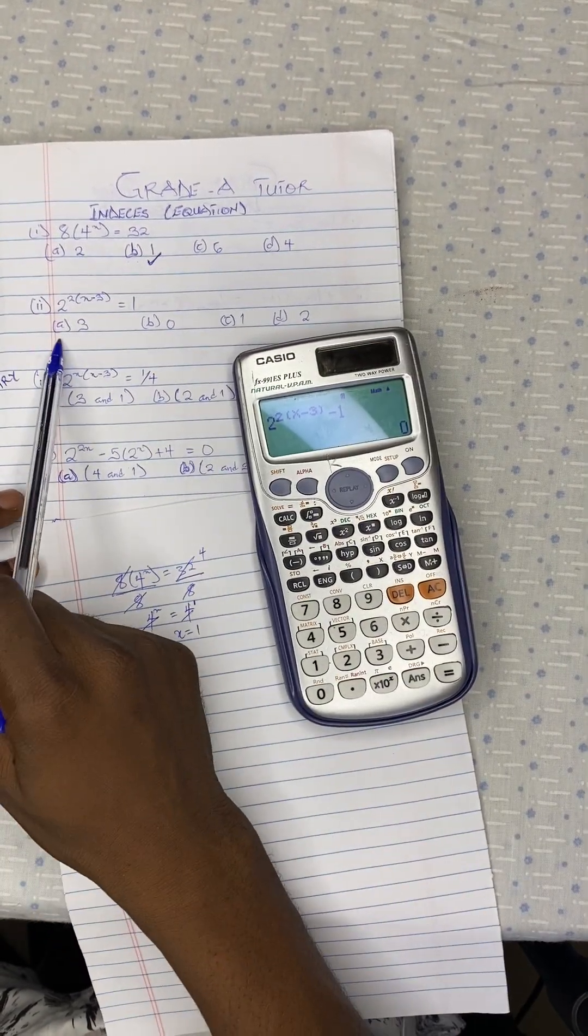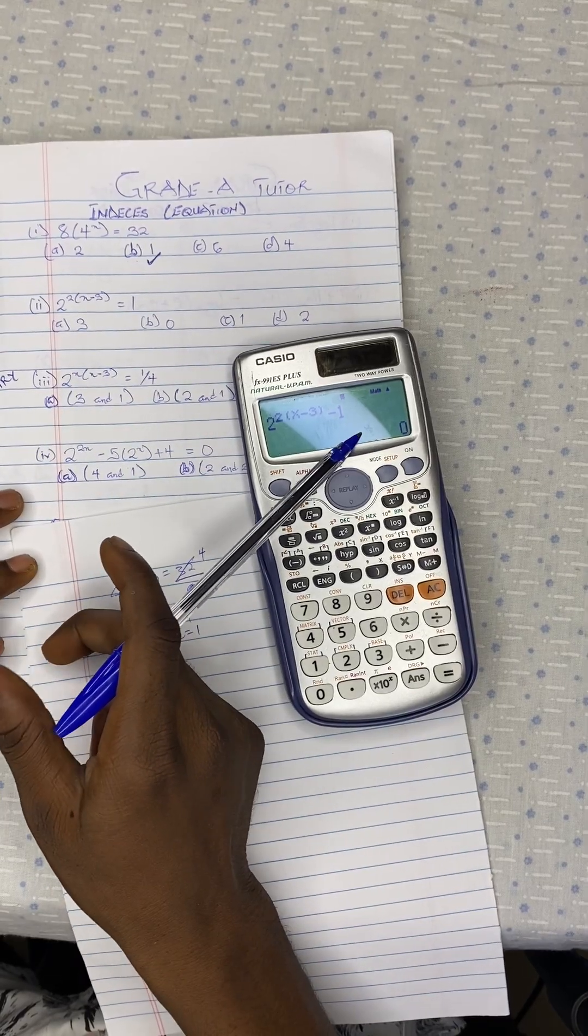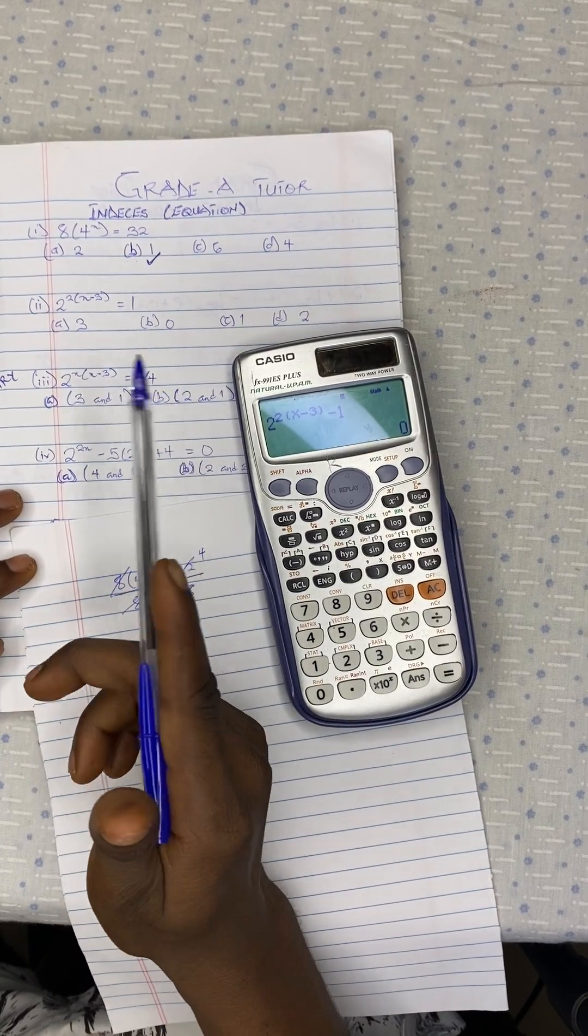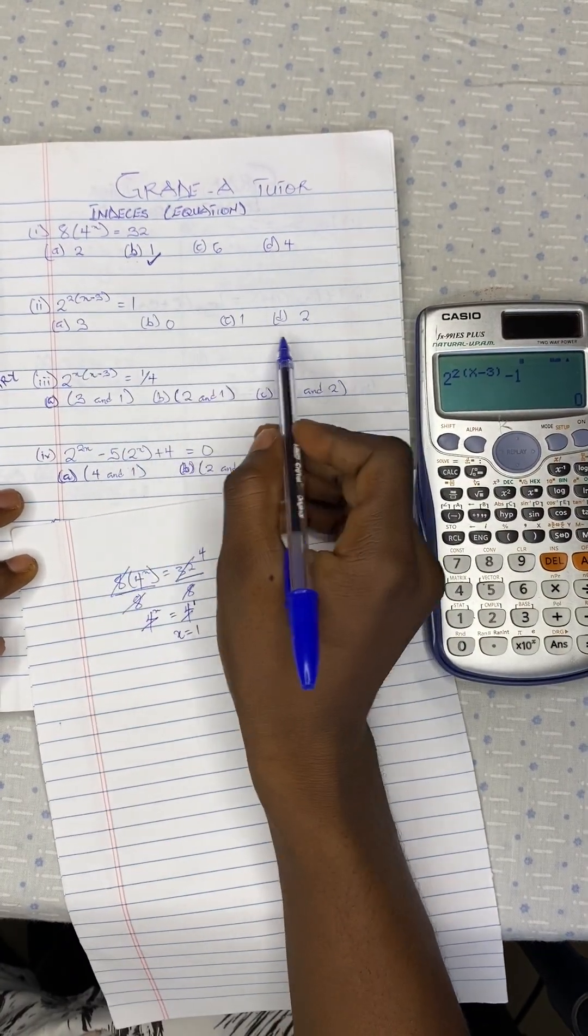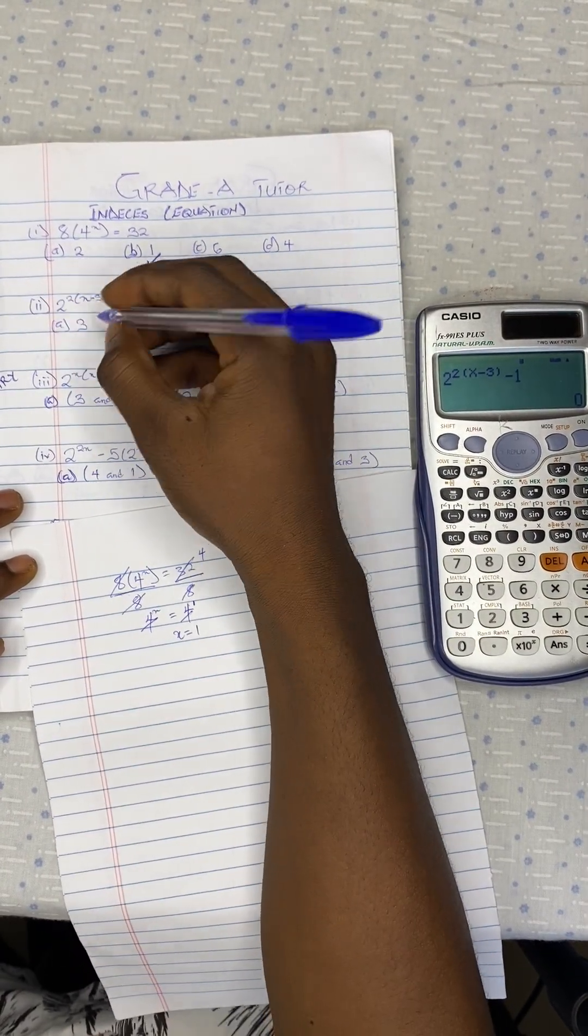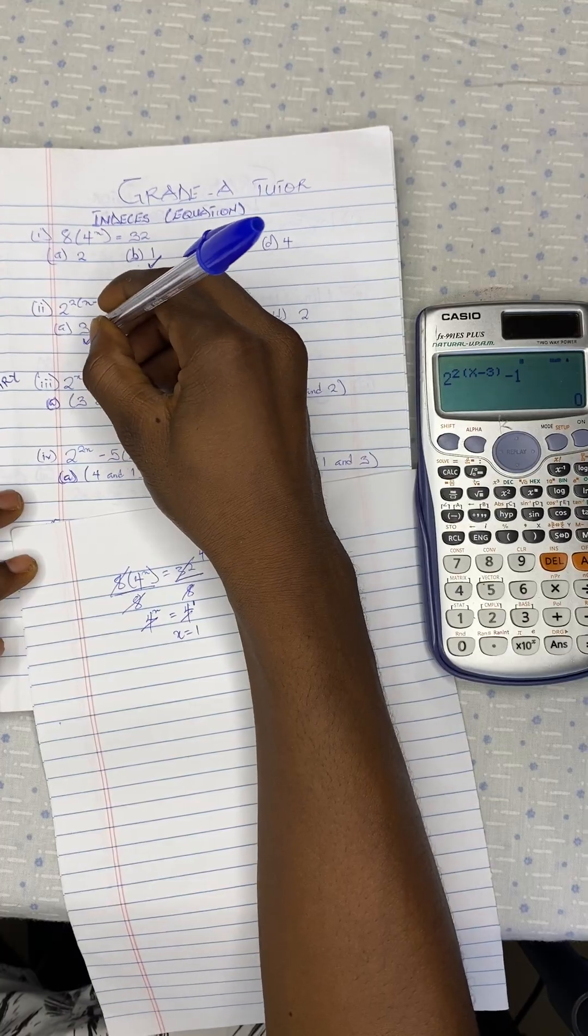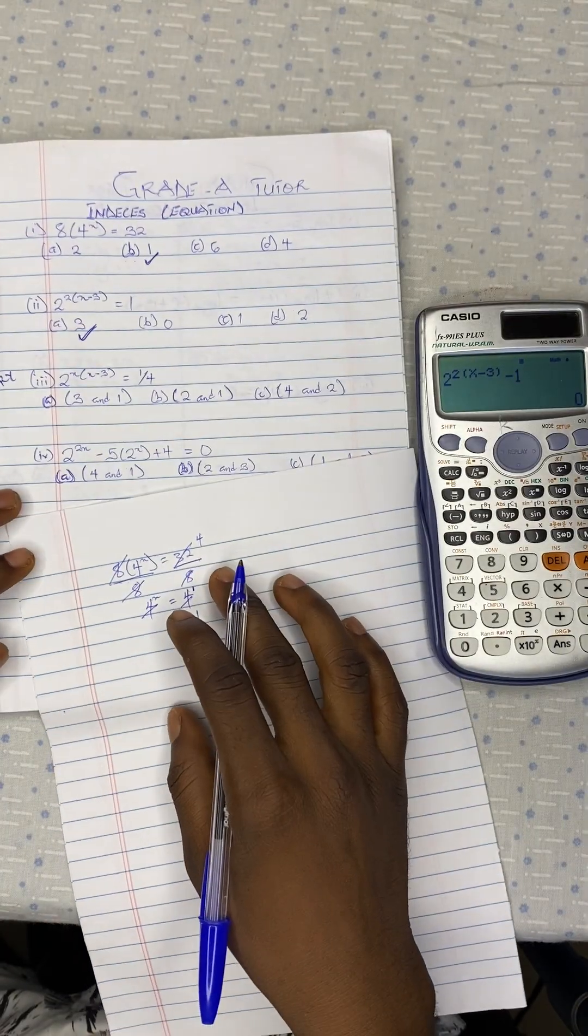We are now going to insert the options. So this is 3. And for option A, which is 3, we are getting 0. So 0 is our final answer. And that is what we are looking for. So we are no more going to do it for the rest of the options. We will just take this as our final answer.